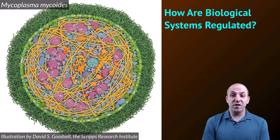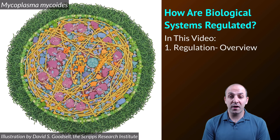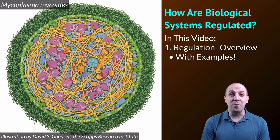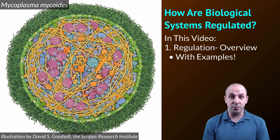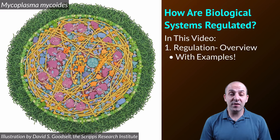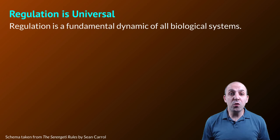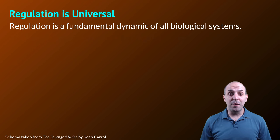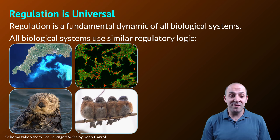The question we're going to be answering in this video is how are biological systems regulated? We're going to talk about an overview of biological regulation, with examples that span all realms of biological systems on Earth. After this overview we're going to look specifically at feedback and how feedback functions in regulation in biology. It's important to remember that regulation is a universal property of biological systems — we see it at all levels. All biological systems use the same basic regulatory logic. We're going to look at four major types of regulatory logic.